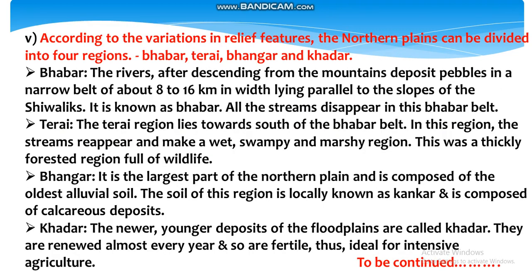According to variation in relief features, the northern plain can be divided into Bhabar, Tarai, Bangar and Khadar. The rivers, after descending from the mountains, deposit pebbles in a narrow belt of about 8 to 16 km lying parallel to the slopes of the Siwalik — this is known as Bhabar. All the streams disappear in this Bhabar belt. Nadiyāṃ parvato se nīce utarte samay Sivālik kī ḍhāl par 8 se 16 km kī caurī paṭṭī meṃ kaṃkar jamā kartī haiṃ; ise Bhāvar ke nām se jānā jātā hai; sabhī sarītāeṃ is Bhāvar paṭṭī meṃ vilupt ho jātī haiṃ.